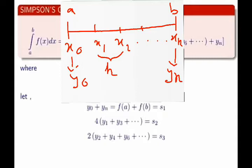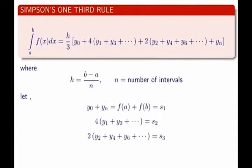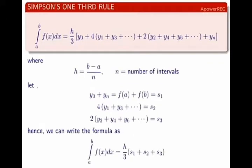So you can write y0 equals f(a) and yn equals f(b). Now let us write s1 equals the sum of first and last ordinate, s2 equals 4 into sum of all odd ordinates, and s3 equals 2 into sum of all even ordinates.